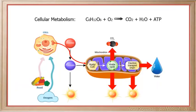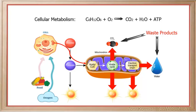You should know that cellular metabolism refers to the breakdown of glucose and oxygen to produce energy in the form of ATP. During this process, carbon dioxide and water are also produced and are the waste products of this chemical reaction.